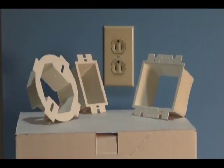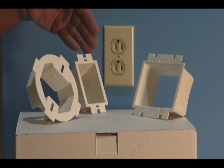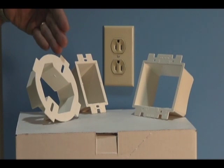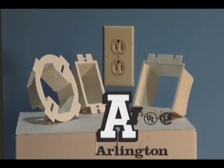Choose the box extender that's right for you. The single gang BE-1, the two gang BE-2, or the BE-1R for round or octagonal ceiling boxes.